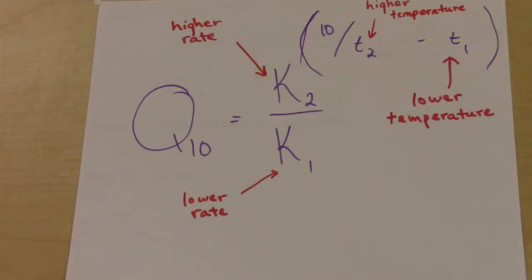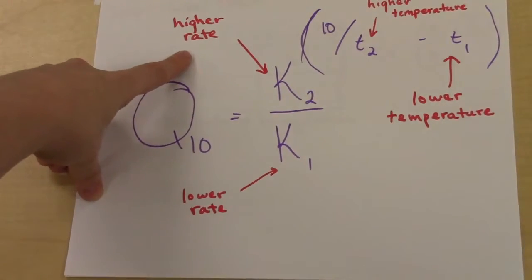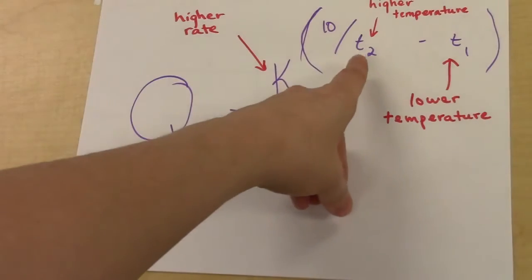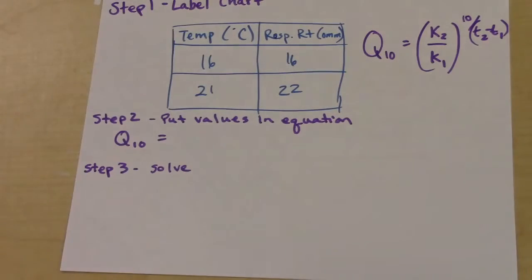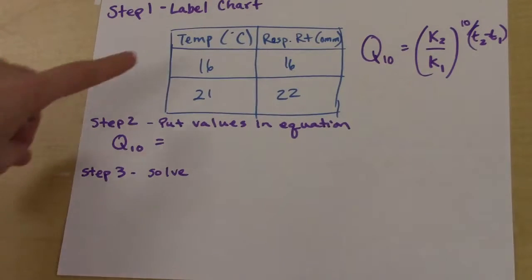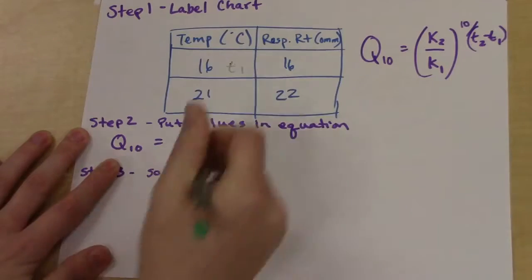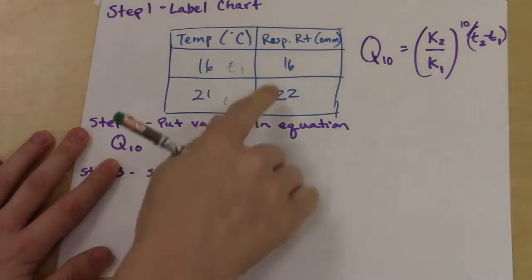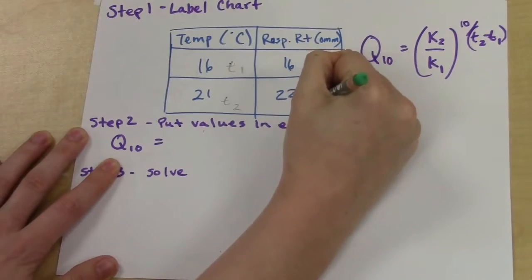What do all these values mean — k2 and k1? Rate is indicated as k in the formula. k2 is the higher rate and k1 is the lower rate. Similarly, the higher temperature is t2 and the lower temperature is t1. So labeling your chart first is a good step one. My temperatures: 16 is lower than 21, so 16 is t1 and 21 is t2. The lower respiration rate is k1 and the higher rate is k2.